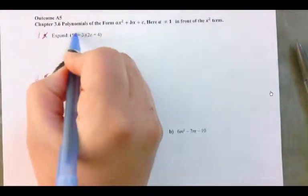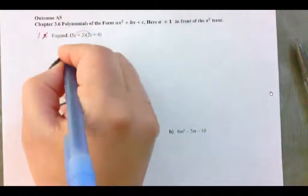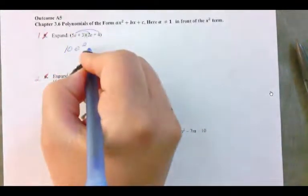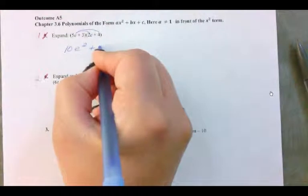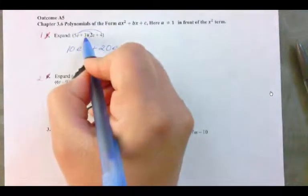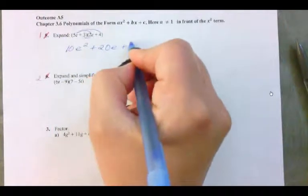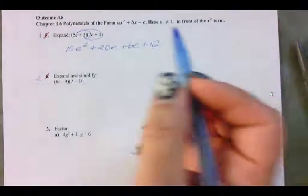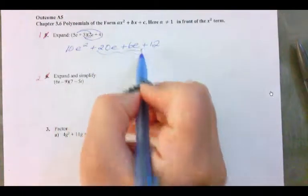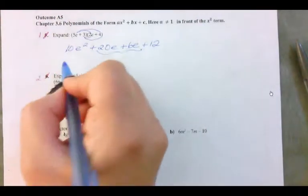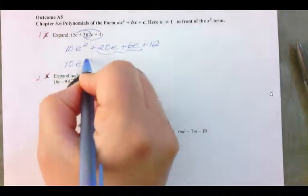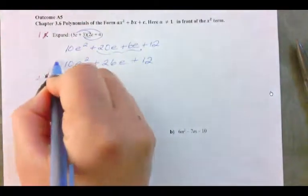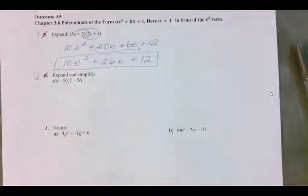So we're going to multiply 5e times 2e — what do we end up with? 10e squared. Then we take 5e times 4, which gives us 20e. Then 3 times 2e gives us plus 6e, and 3 times 4 is plus 12. Combining those, we get 10e squared plus 26e plus 12. So this is completely expanded and simplified.